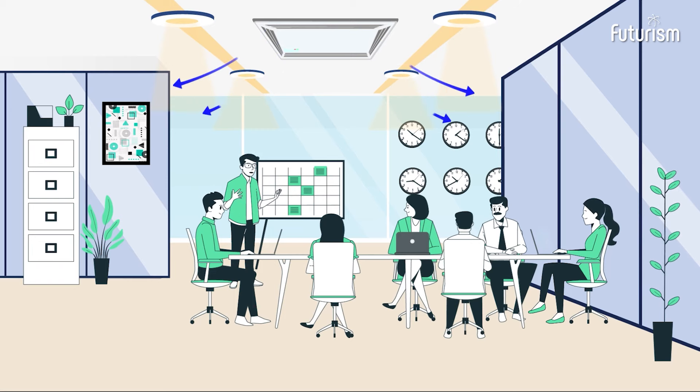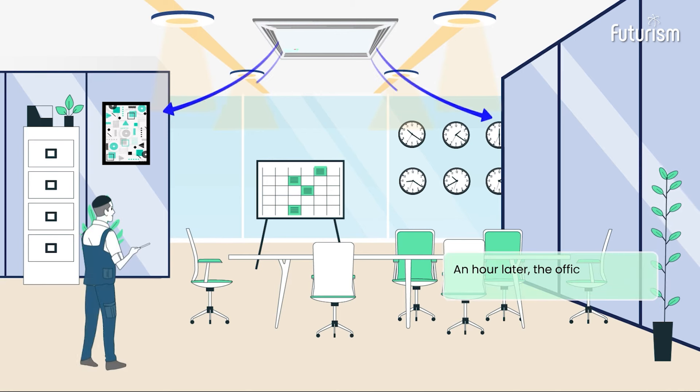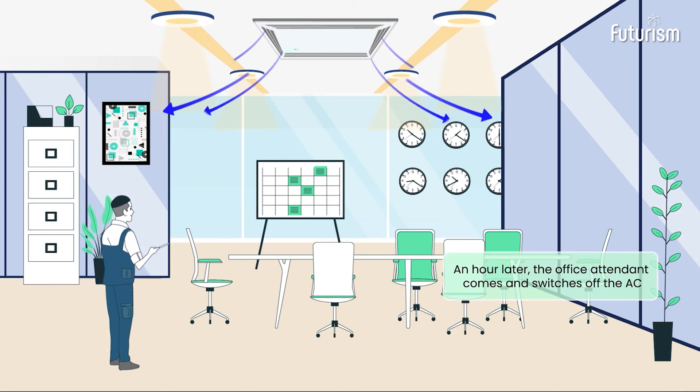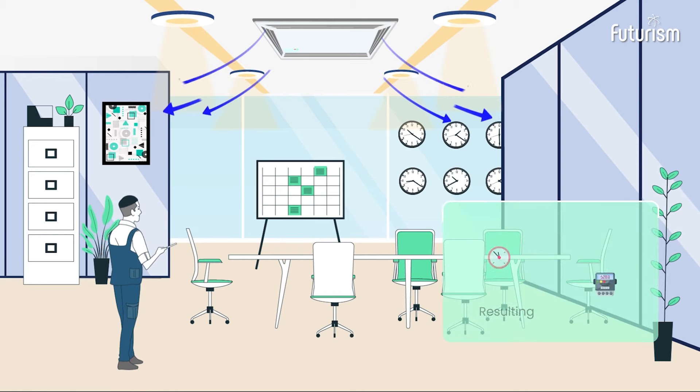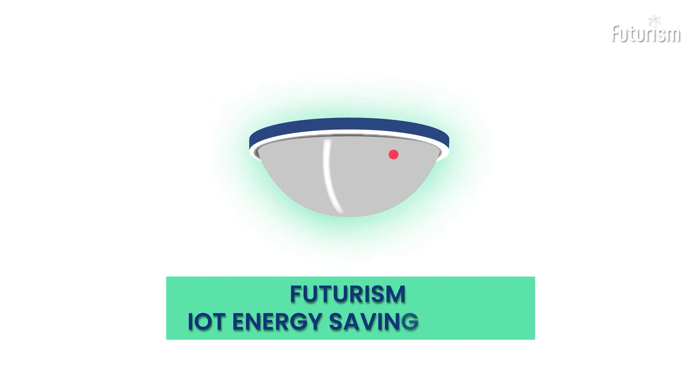everyone leaves the room, forgetting to turn off the AC and lights. An hour later, the office attendant comes and switches off the AC, resulting in one hour of wasted electricity. This is where we introduce our Futurism Internet of Things enabled energy-saving device.